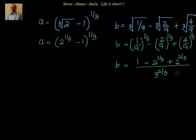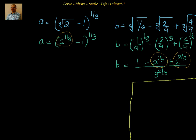This whole expression is in terms of 2^(1/3). So I want to make 2^(1/3) a variable to make it easier to solve. I will use this as my working space and say x equal to 2^(1/3). That means x squared equal to 2^(2/3), x cubed equal to 2, and x cubed plus 1 equal to 3.